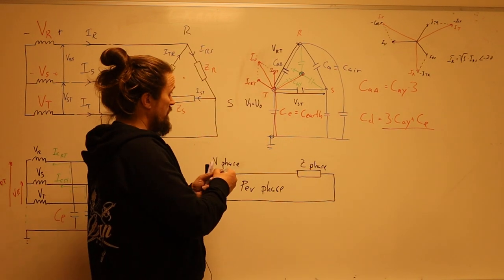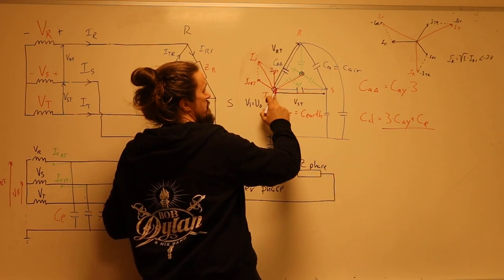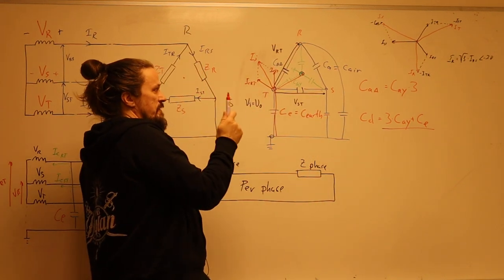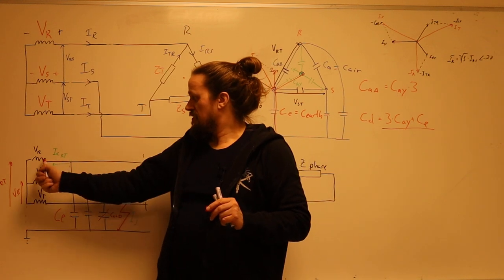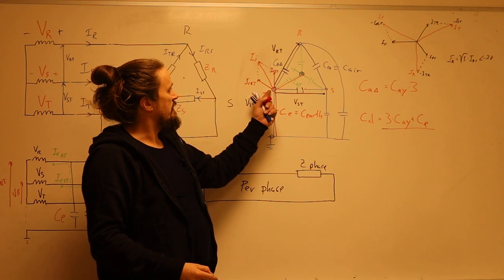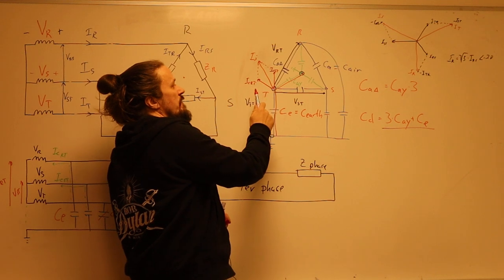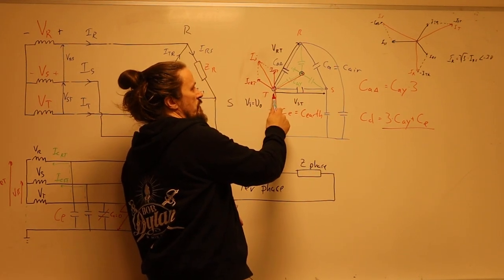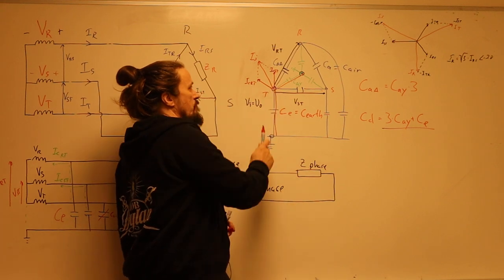If you look at it, this is where you have the vst and this is where you have the vrt. That means that the capacitance current going here in icrt is 90 degrees leading to vrt, so there's a capacitance current here. Then there's another one that's 90 degrees leading to vst which is icst.